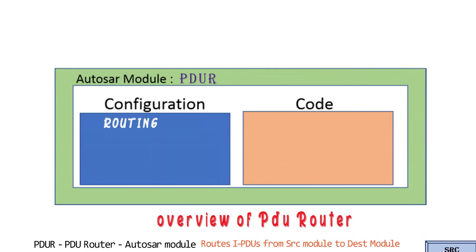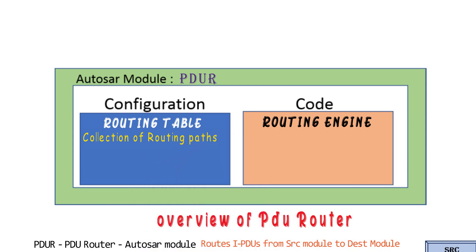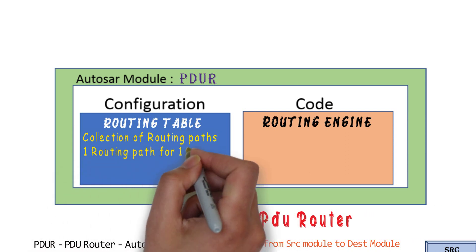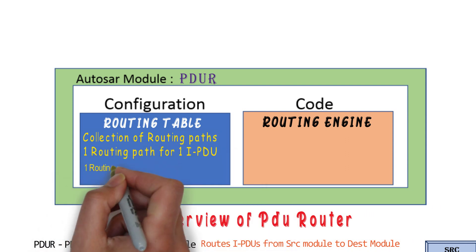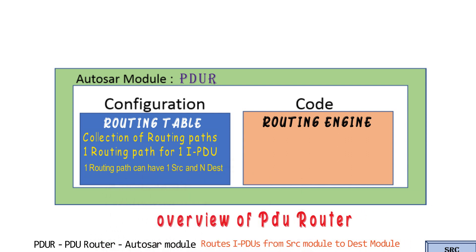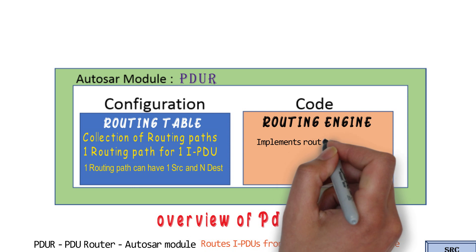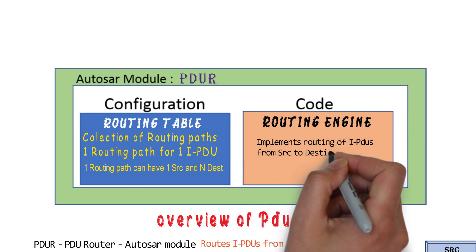PDUR contains routing tables, which is the configuration part, and a routing engine, which is the code part. The routing table is a collection of multiple routing paths, and each path is for a single IPDU. Each routing path contains one source and one or more destination configurations. The routing engine implements routing of these PDUs as per the configuration done.